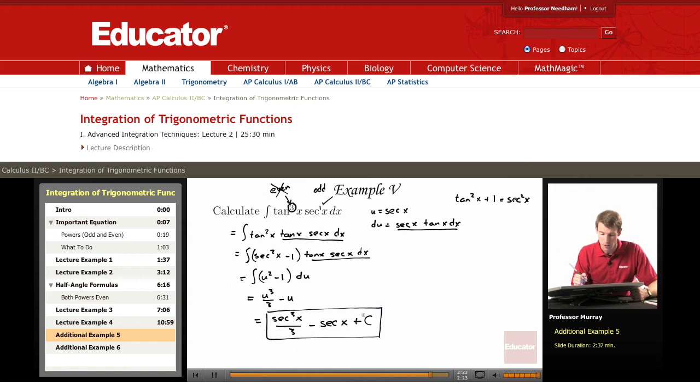So again, the reason that worked is because we were checking the odd and even powers on the tangent and the secant. So it worked because we had an odd power of secant.